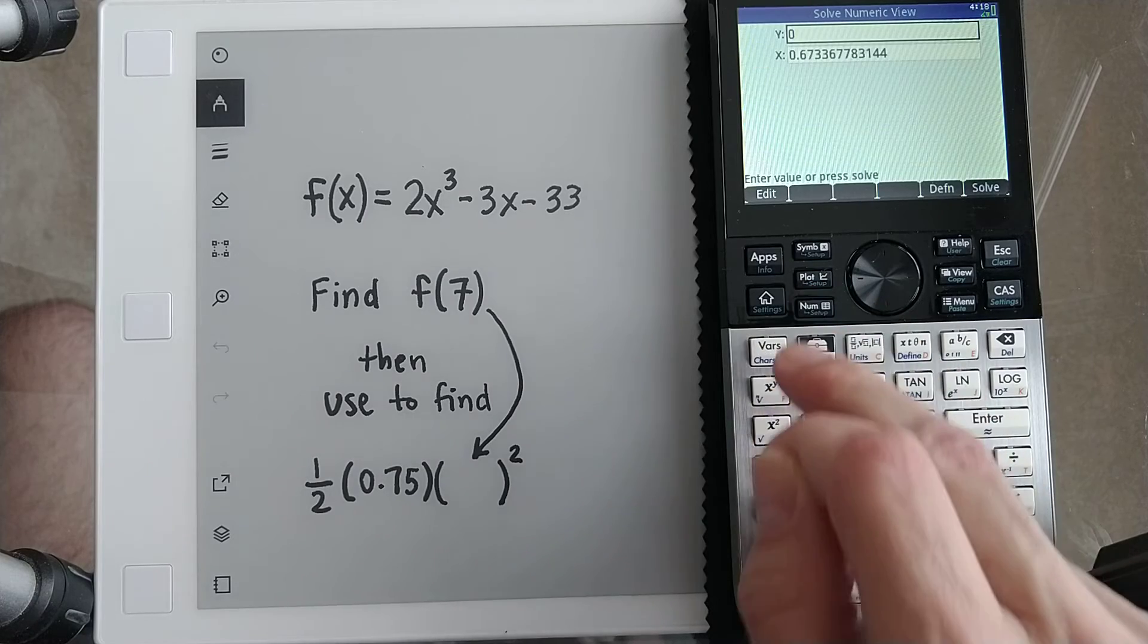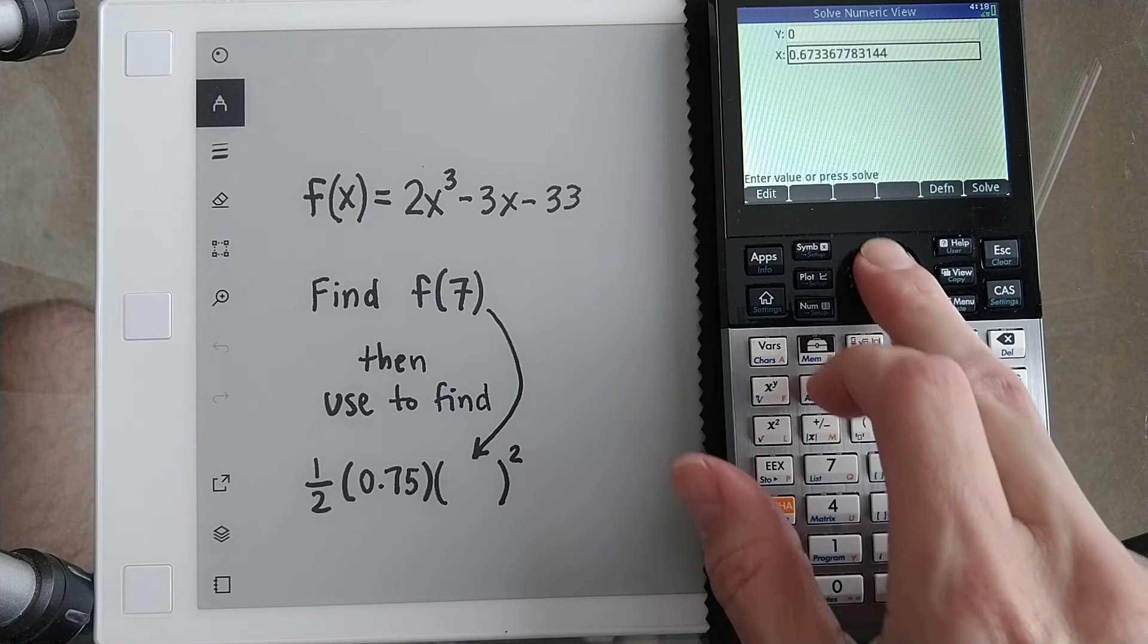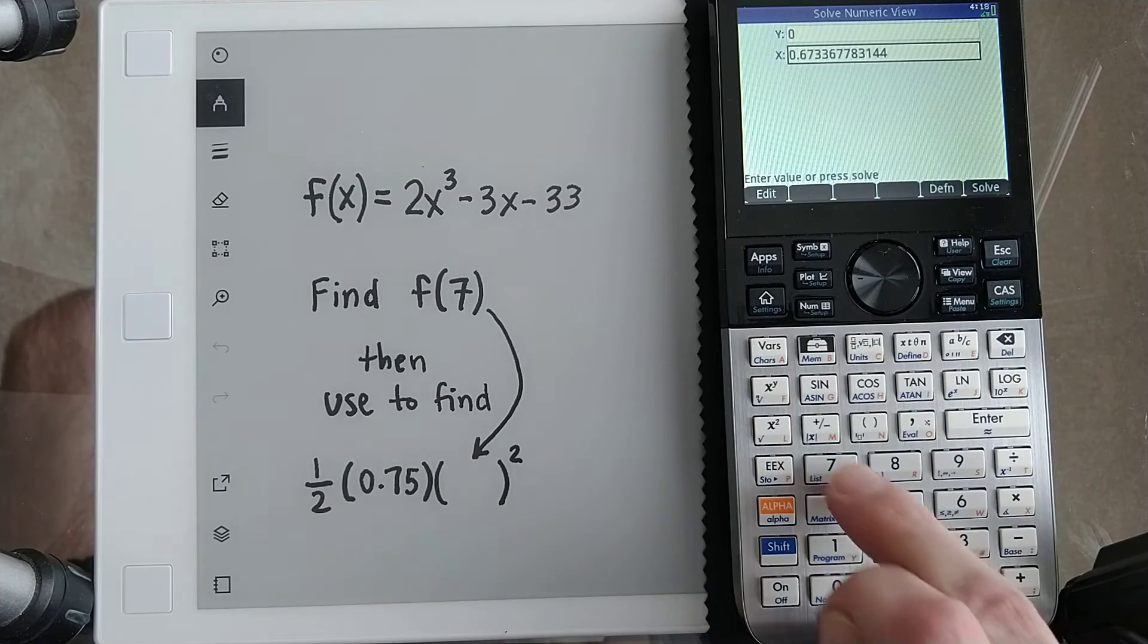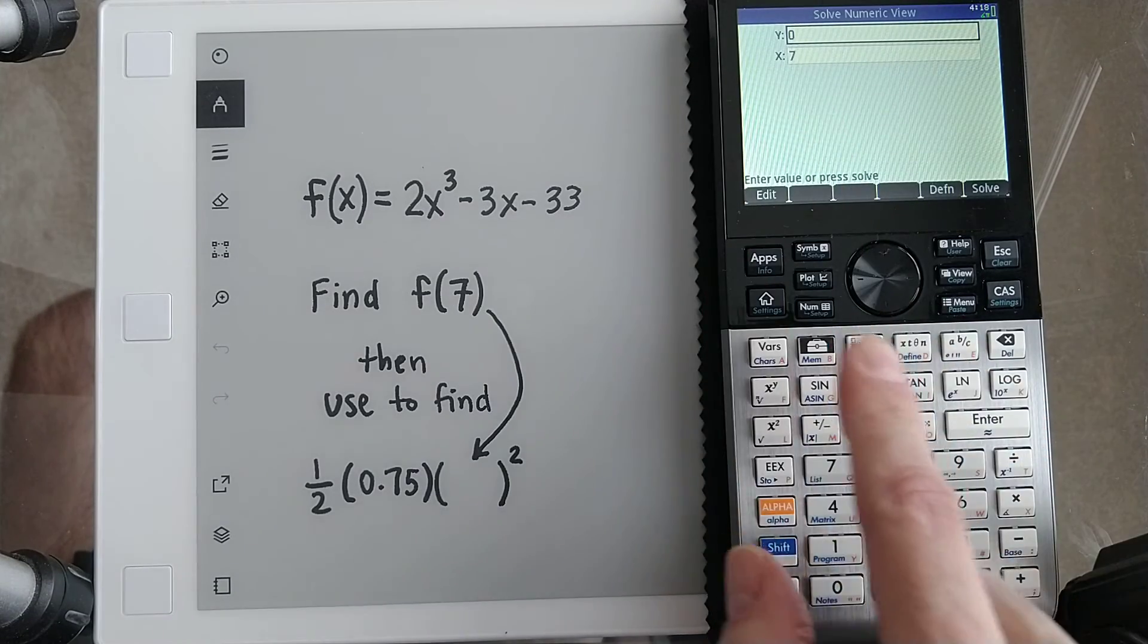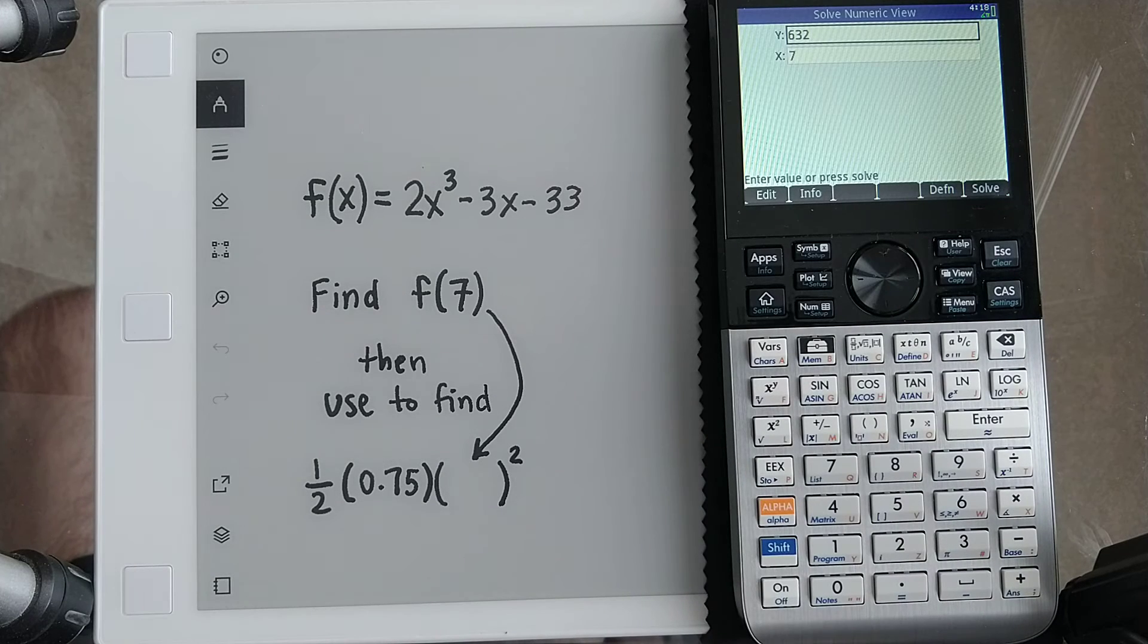Now I can go ahead and hit this number, and if I want to know the value of y when f is 7, I put a 7 in for x, and then with the y highlighted, I hit solve. 632.